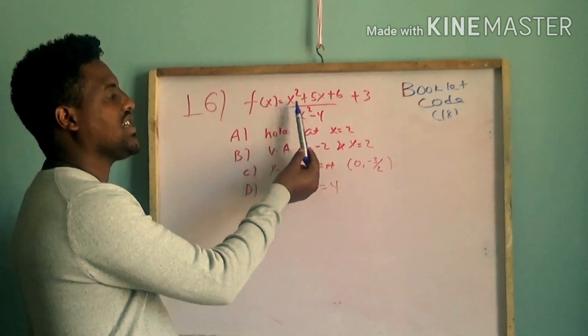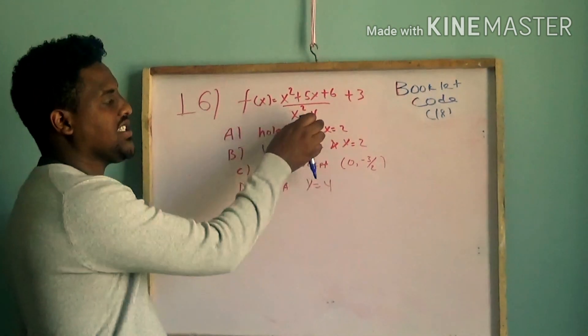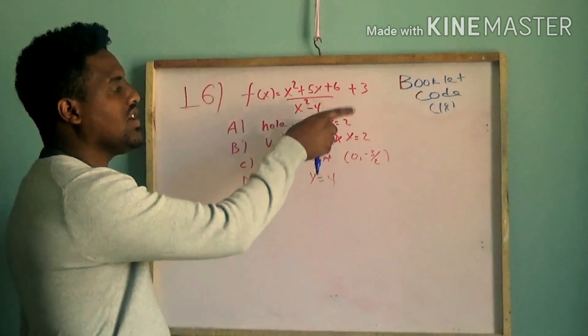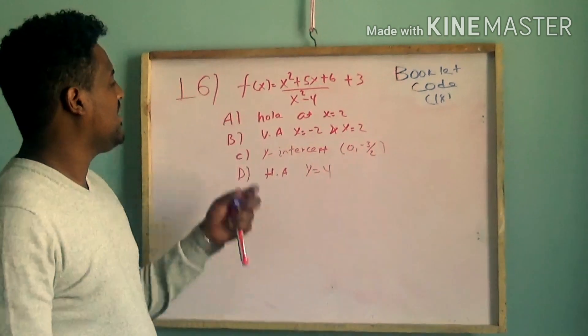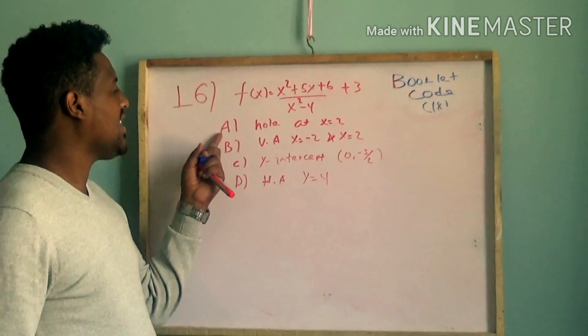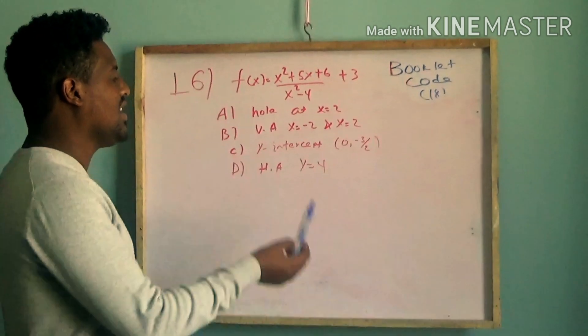f of x is equal to x squared plus 5x plus 6 over x squared minus 4. Which of the following is true?